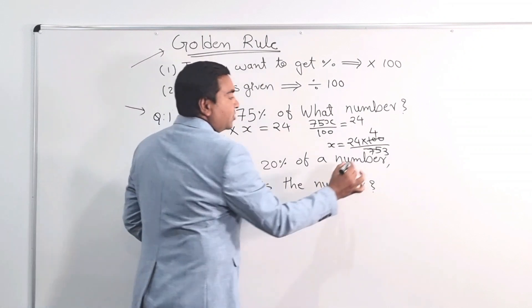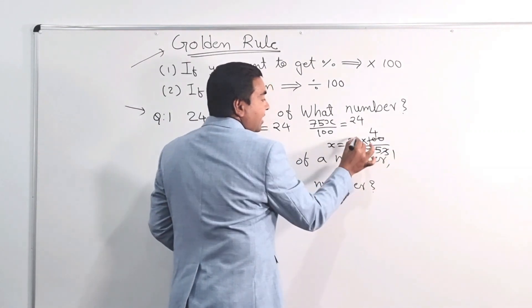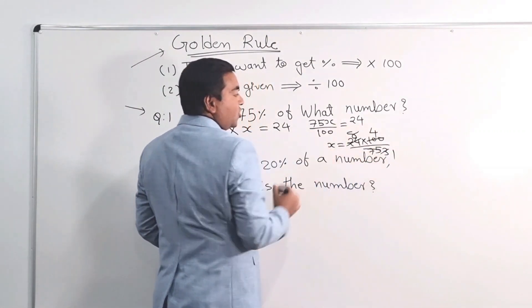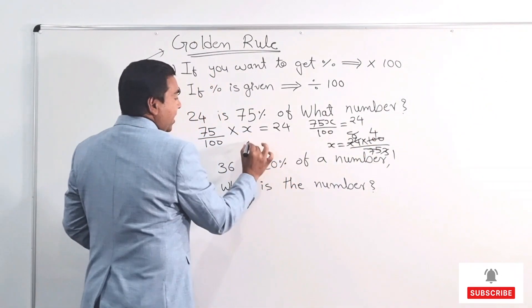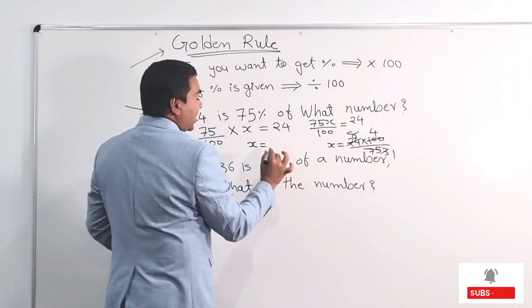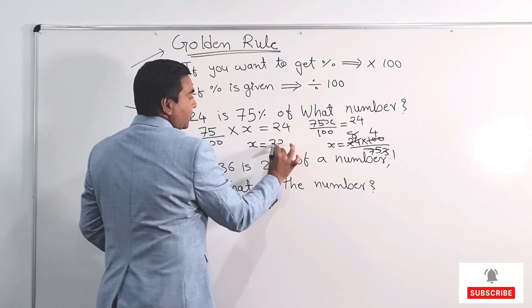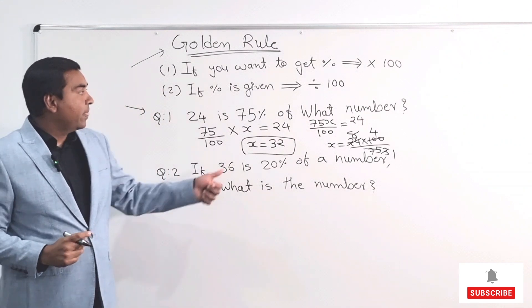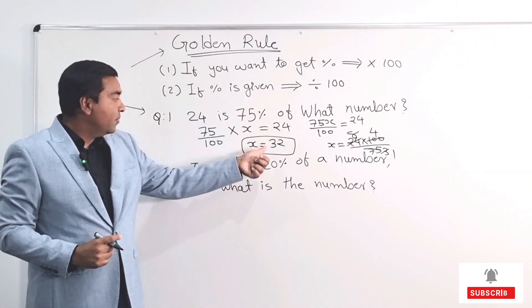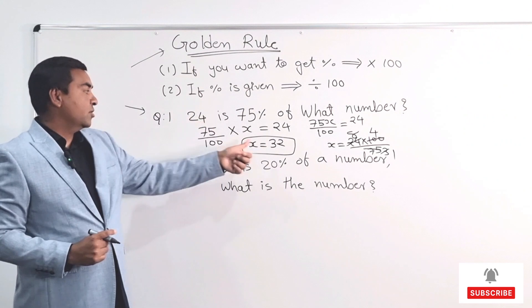So 3, 1s are 3. And 3, 8s are 24. So I've got 8 times 4. So my number X equal to 8, 4s are 32. So 32 is the number I was looking for. So 75% of 32 is 24. So 32 is the answer.